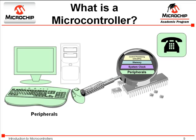Peripherals on a microcontroller are usually associated with a particular pin on the package. So, if you want to communicate a certain piece of information with the device, or receive a certain piece of information from the device, you will connect circuitry to that specified pin to accomplish this. These four basic components of the microcontroller — the processor, memory, system clock, and peripherals — are what differentiate one type of microcontroller from another.